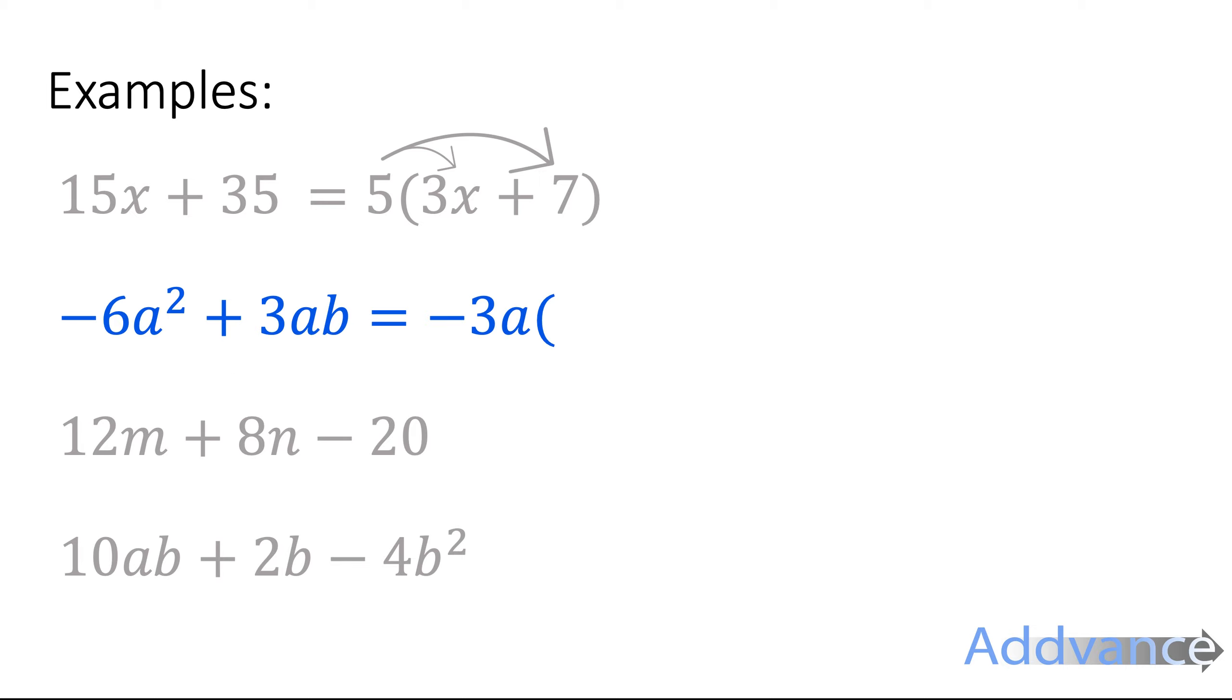Okay, minus 3a times something is minus 6a squared. That will be 2a because minus 3a times 2a will be minus 6a squared. Now minus 3a times minus b will give you 3ab. Notice here that the negative, negative gives you the plus, and you have to make sure you get the signs right. If you put positive here you would get the wrong answer. It has to be minus 3a times minus b is positive 3ab.